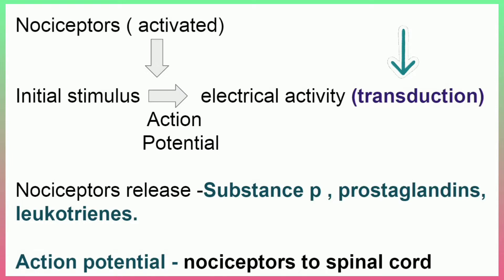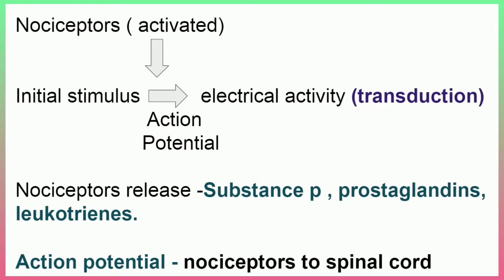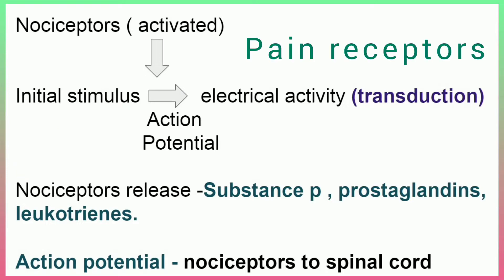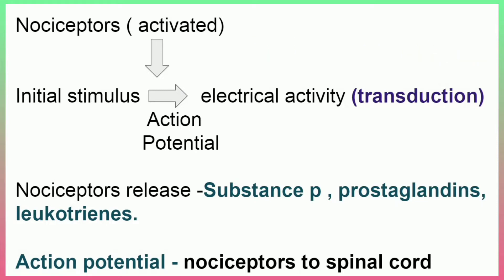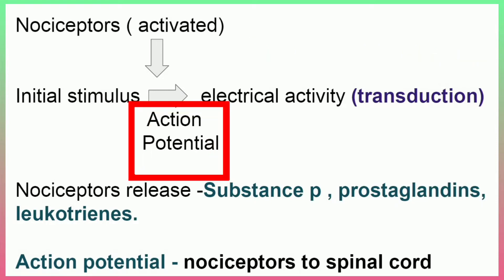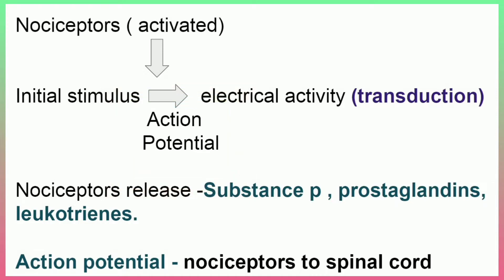Pain can be triggered by an electrical, chemical, thermal, or mechanical stimulus. This is why it is detected by the nociceptor. This generates an action potential, which is called electrical activity. This process is called transduction.